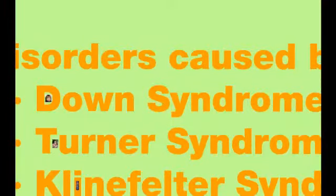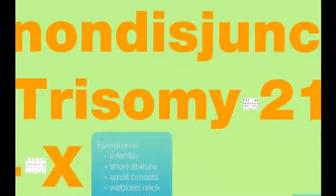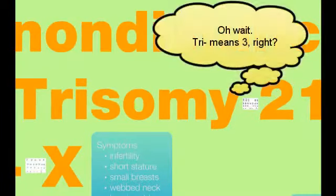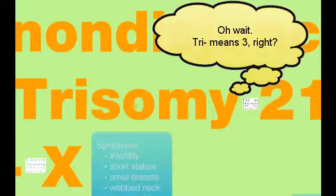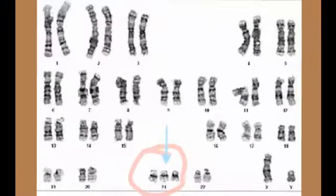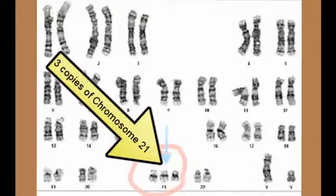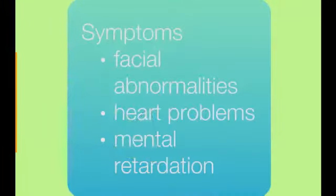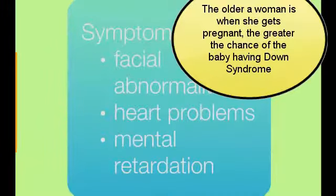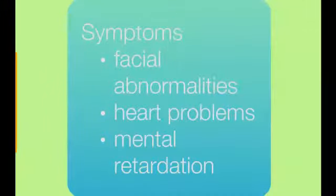We'll start with Down syndrome, probably one that you're familiar with — most people have met a person with Down syndrome. Down syndrome is called trisomy 21: the 'tri' means three and the 21 refers to the chromosome number. People with trisomy 21 have an extra copy of chromosome 21. Common symptoms include facial abnormalities, heart problems such as a heart murmur or a leaky valve, and mild to moderate intellectual disability.